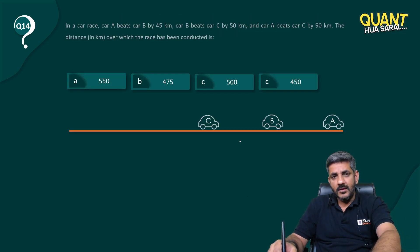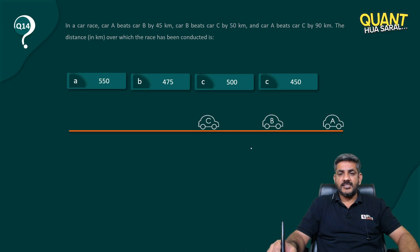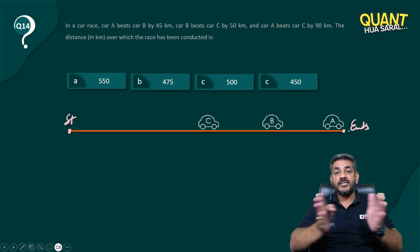So once again, let us say this is the complete race as you see on your screen. The race starts from here and the race ends here. So the total length of the race is this orange line that you see on the screen.